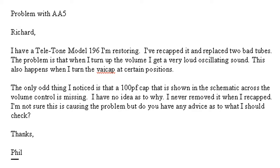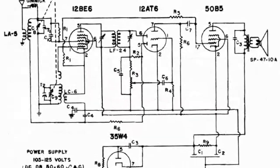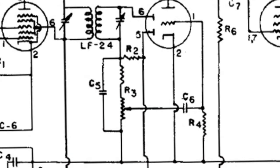He looked up the wiring diagram and noticed that there's a 100 picofarad capacitor missing in the circuit that goes across the volume control. I looked up the wiring diagram, and the one that he's talking about is C5.